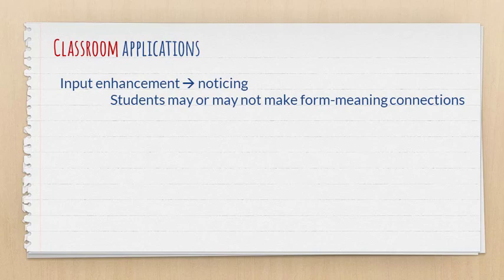What does this mean for the classroom? Classroom applications that are premised on noticing would be things like input enhancement, where you underline, bold, or change the color of certain words or certain morphemes, maybe a verb ending for example. According to Van Patten, the students notice that you underline, they notice that something is bold, but they may or may not assign a particular meaning to those forms that they're noticing.